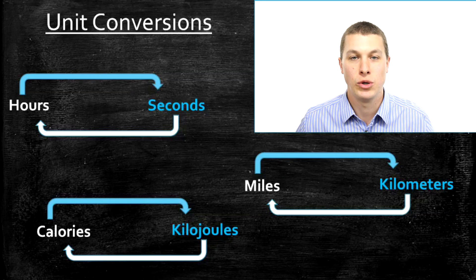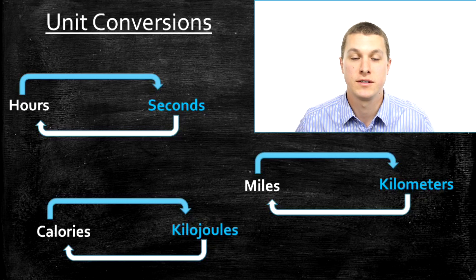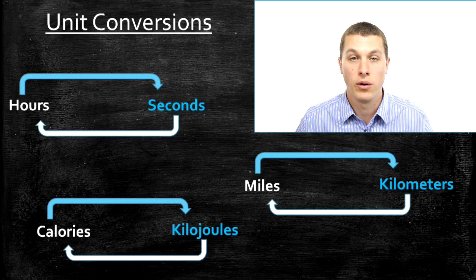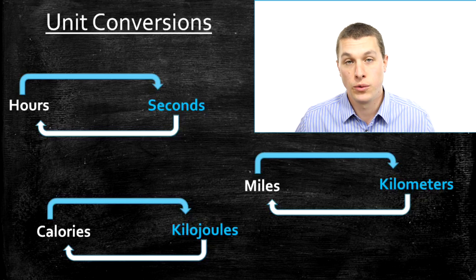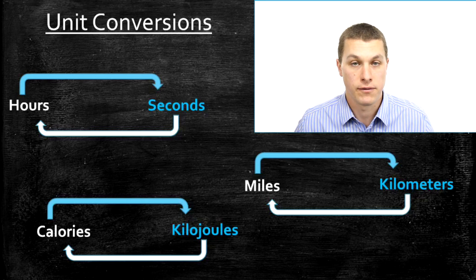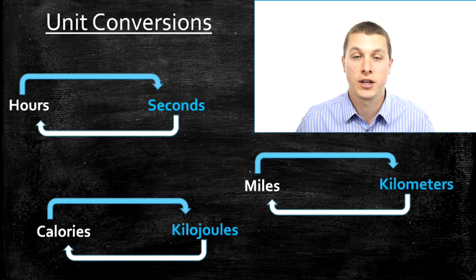Today on Real Chemistry we're going to talk about unit conversions. It's basically just a way to take a measured quantity from one set of units to another set of units. For example, if you know how long you've run in kilometers and want to know how far that is in miles, or if you knew how many hours you ran and wanted to know how many seconds — those are examples of unit conversion. We'll go step by step through several types of unit conversions so you can figure out how to use this process.